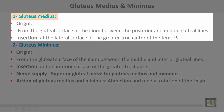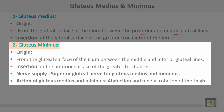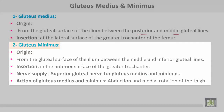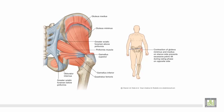Gluteus medius takes origin from the gluteal surface of the ilium between the posterior and middle gluteal lines, with insertion at the lateral surface of the greater trochanter of the femur. Gluteus minimus takes origin from the gluteal surface of the ilium between the middle and inferior gluteal lines, with insertion on the anterior surface of the greater trochanter. Nerve supply: superior gluteal nerve for both gluteus medius and minimus. Action: abduction and medial rotation of the thigh. This is gluteus medius covering the gluteus minimus muscle.